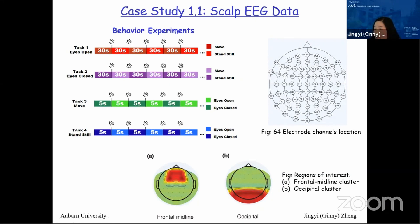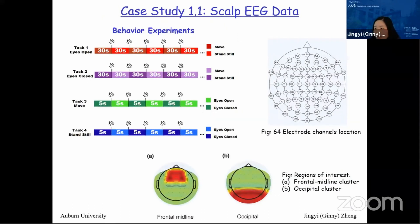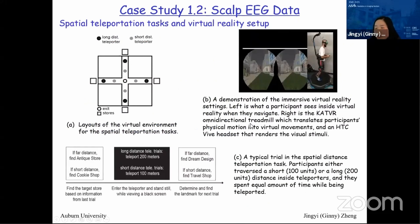The second dataset is also from the SYNC lab but with a different task — a spatial teleportation task using virtual reality. This dataset has more trials per individual: around 50 trials for each of 90 individuals, compared to only 10–20 trials per subject in the first study. Some methods that work on this larger dataset did not work on the previous smaller one.